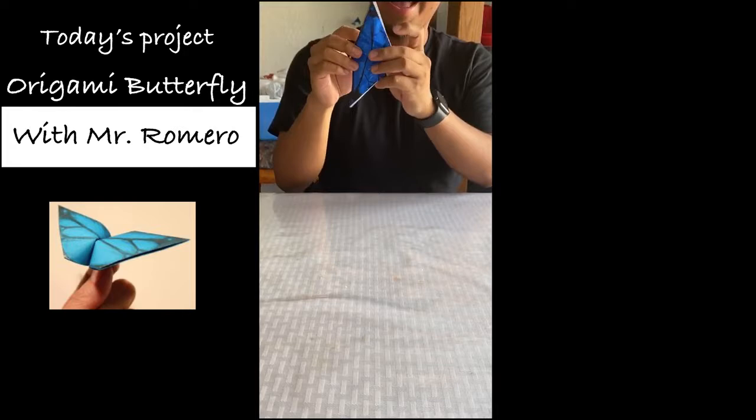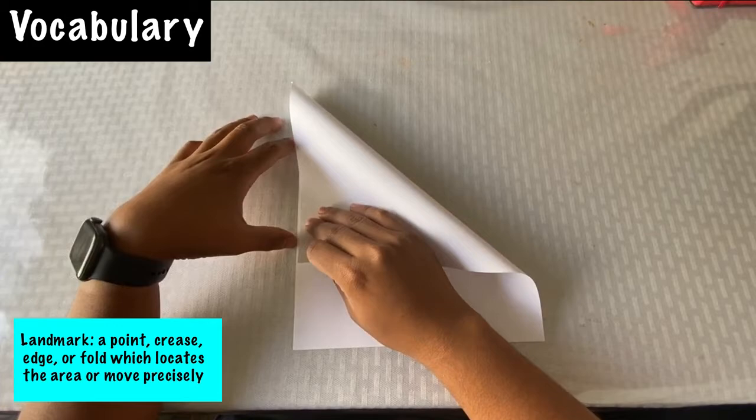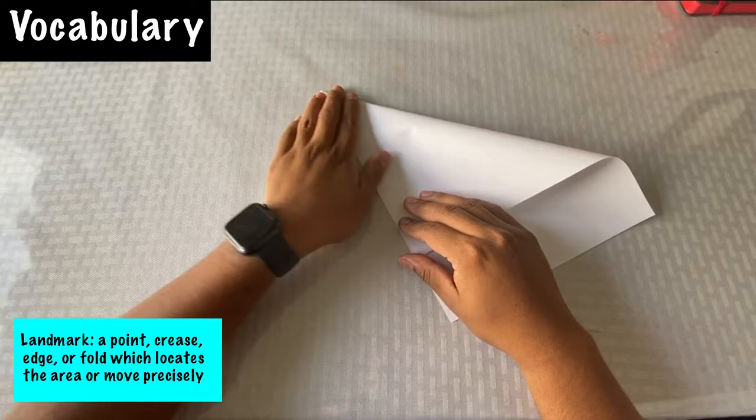So don't worry about the speed of the video. You could always pause it. For the vocabulary, our first word will be landmark, which means a point, crease, edge, or fold which locates the area or move precisely.